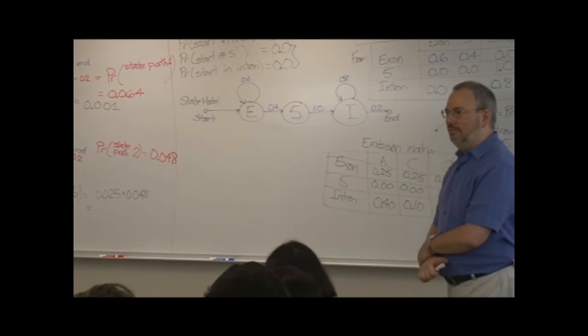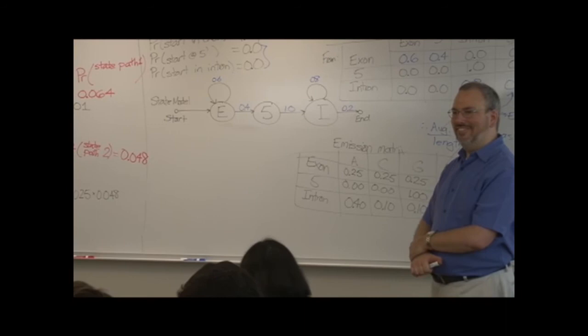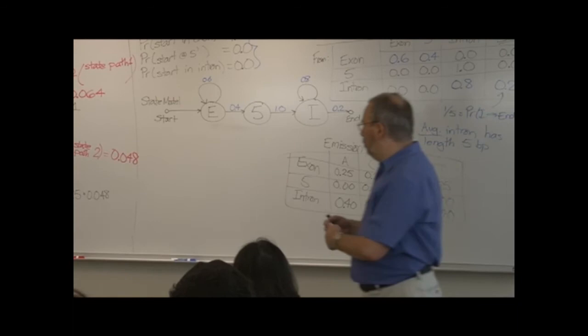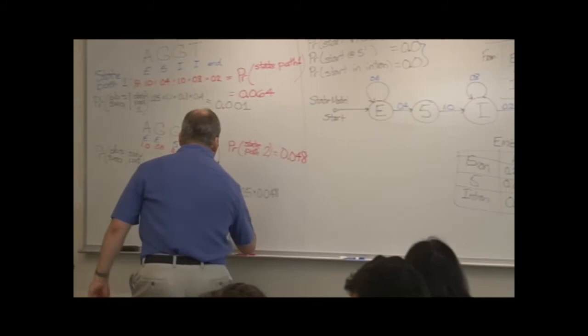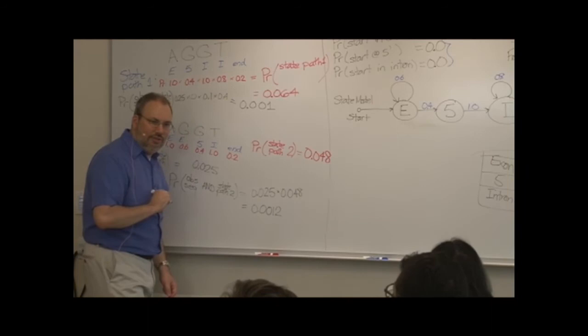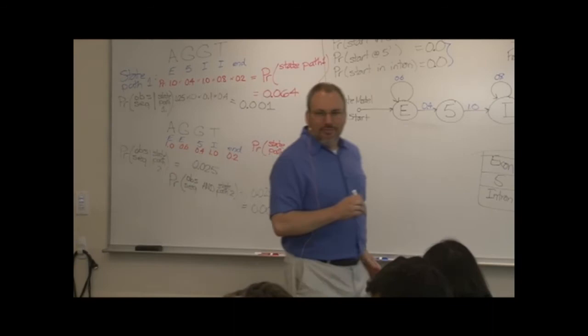Probability that we follow state path two is 0.048. If we did that, then we have 0.025 of generating the observed sequence. So what do we do to those two probabilities? Multiply them together. Which yields 0, 0, 1, 2? Is this what other people are getting as well? 0, 0, 1, 2. 0, 0, 0, 1, 2?